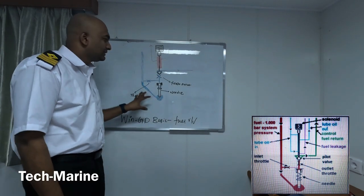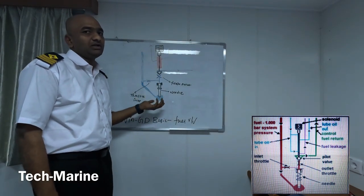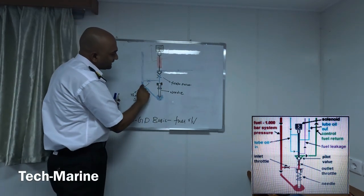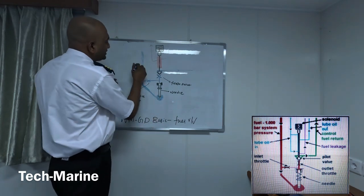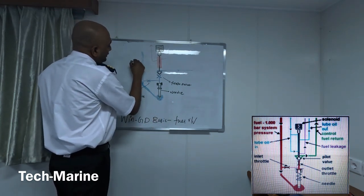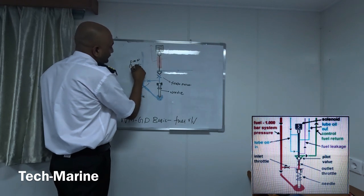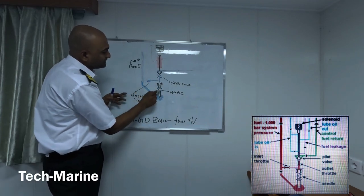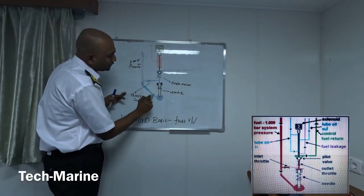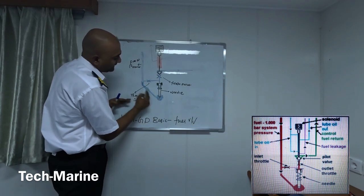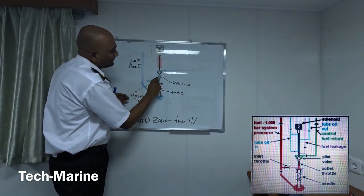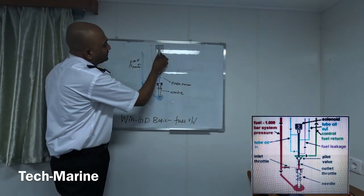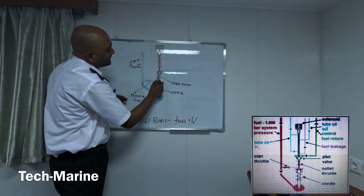I will now explain the fuel working using the engineering diagram so you will understand better. This blue color line is a high pressure fuel oil pipe at thousand bar. This is the needle valve. The fuel oil goes to the bottom of the needle and waits there. At the same time it goes to the top of the needle through one throttle orifice. This is the solenoid valve connected to the assembly, which has one spindle and a ball.